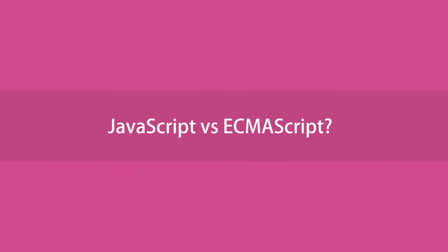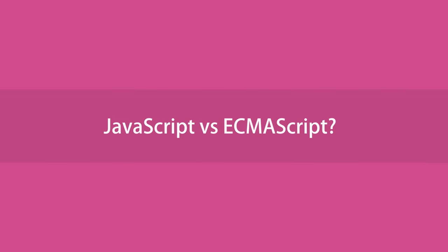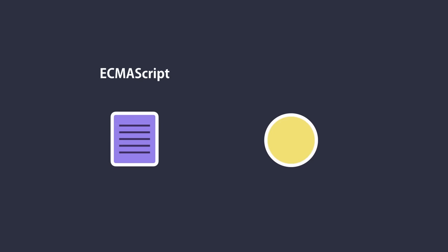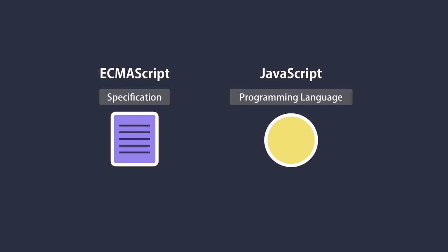And finally, the last question: What is the difference between JavaScript and ECMAScript? ECMAScript is just a specification. JavaScript is a programming language that conforms to this specification. We have an organization called ECMAScript which is responsible for defining standards and taking care of this ECMAScript specification. The first version of ECMAScript was released in 1997.